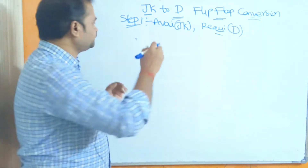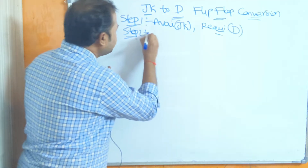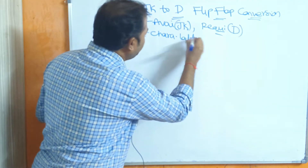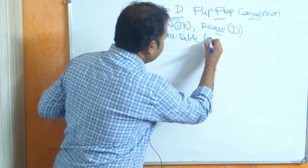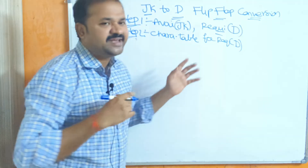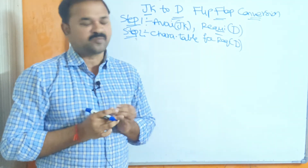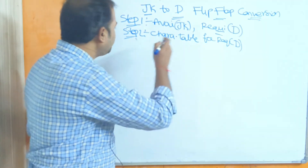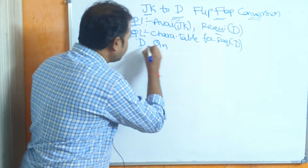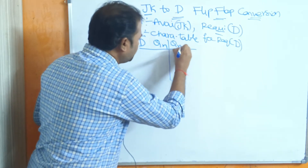Step 2 is to construct the characteristic table for the required flip-flop. Step 2 is based on the required flip-flop, whereas steps 3 and 4 are based upon the available flip-flop. For the D flip-flop we require 2 inputs: D and Qn, and the output is Qn+1.